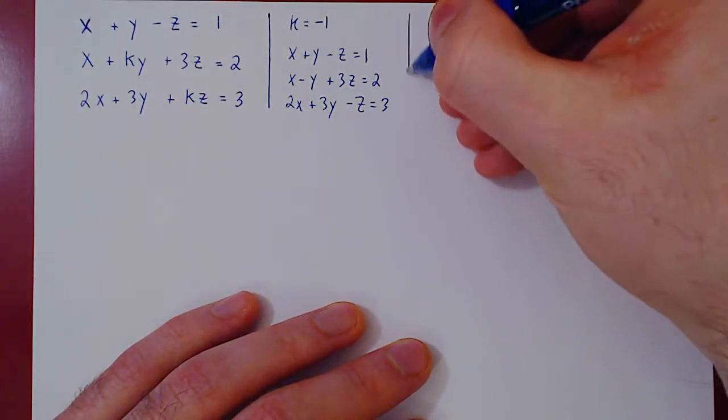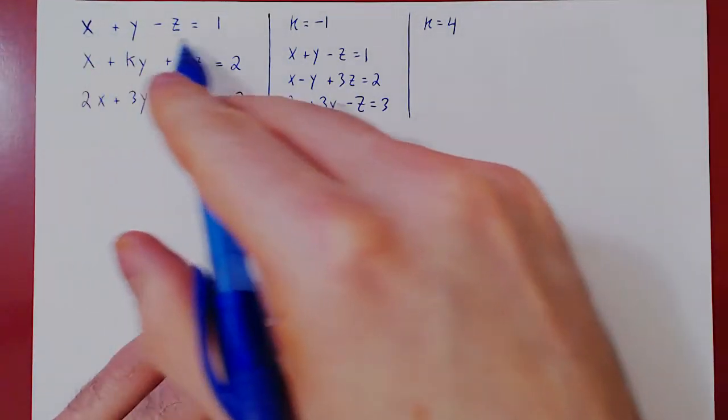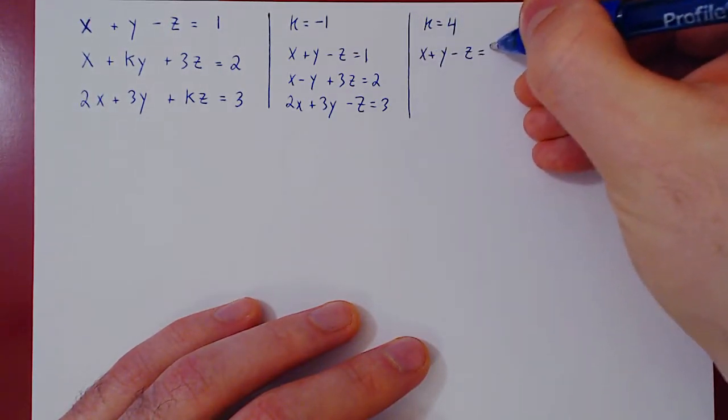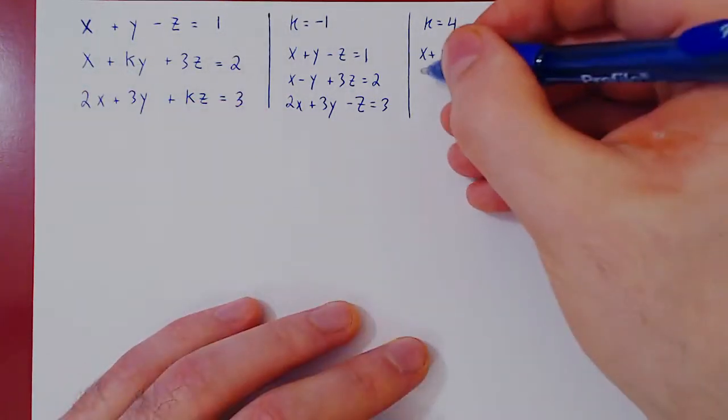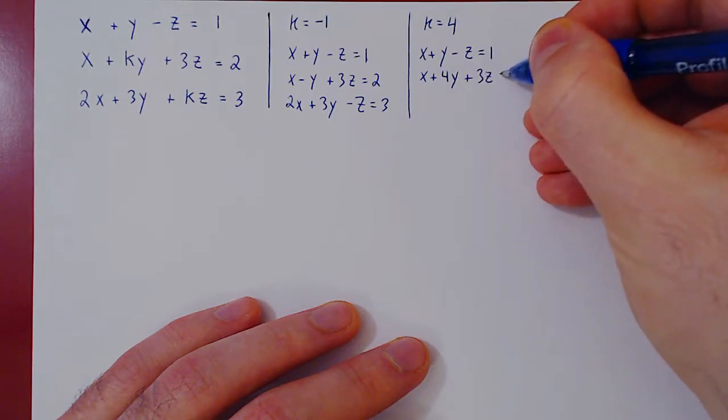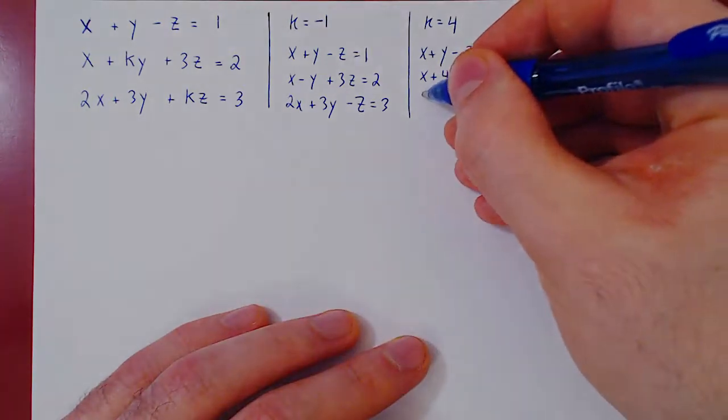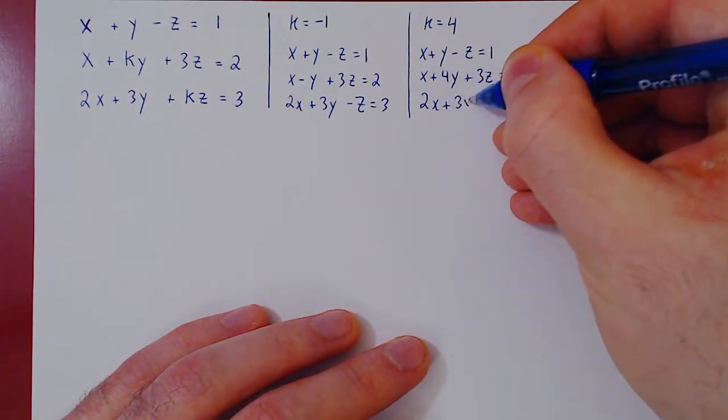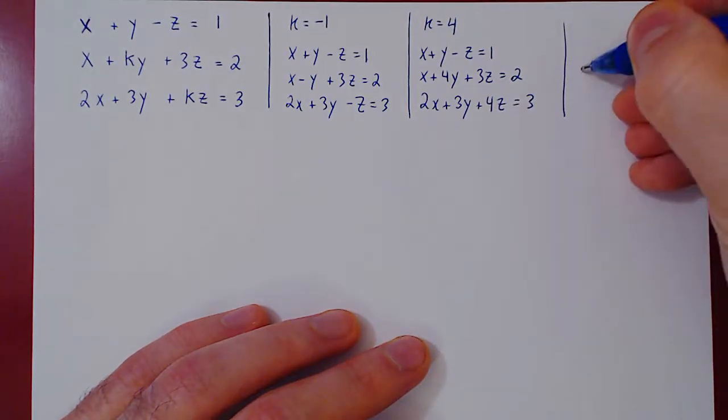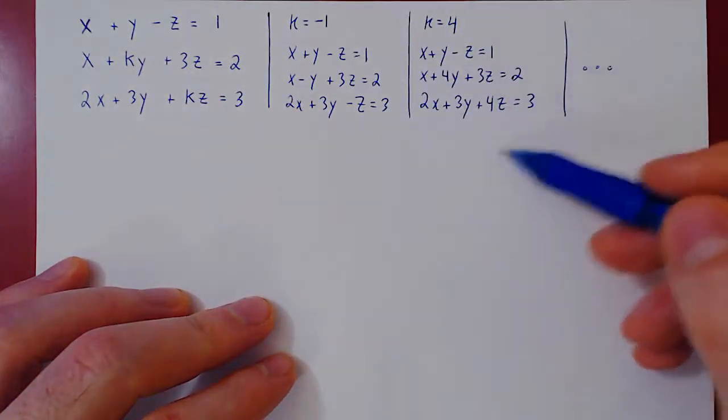Well, if you replace k by, say, 4, you will get a different linear system. The first equation stays the same. The second equation becomes x plus 4y plus 3z is equal to 2. And the third equation becomes 2x plus 3y plus 4z is equal to 3. And so on. So for every different value of k that you choose, you will get a different linear system.